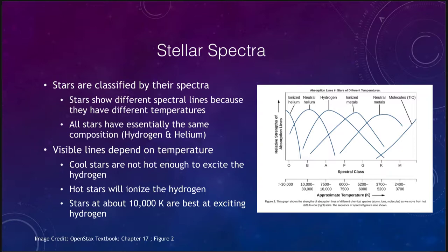What we find is that we do classify stars by the appearance of their spectra — what kind of lines do we see in the spectrum?